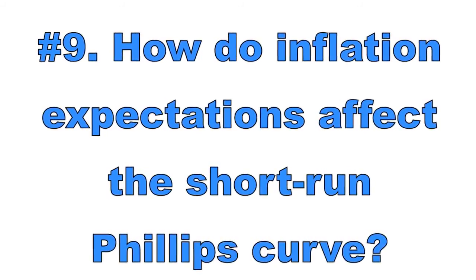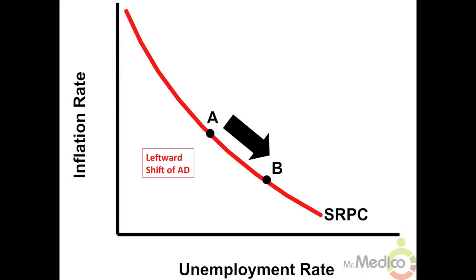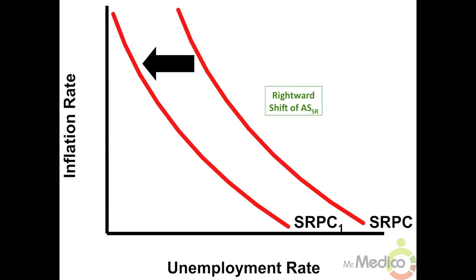Number nine: how do inflation expectations affect the short-run Phillips curve? Inflation expectations wield a lot of power within an economy. As seen in Noble 3, changes in inflation expectations shift the short-run aggregate supply curve. When inflation expectations rise, resource costs rise and short-run aggregate supply shifts left, causing high prices and high unemployment — represented by a rightward shift of the short-run Phillips curve. Key rules: when aggregate demand shifts one way, move point-to-point the opposite way along the short-run Phillips curve; when short-run aggregate supply shifts one way, the short-run Phillips curve shifts the opposite way.